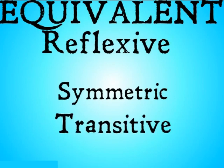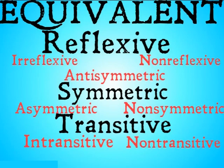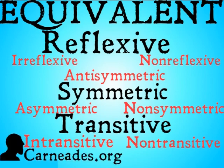So that covers equivalent, reflexive, symmetric, transitive, irreflexive, non-reflexive, anti-symmetric, asymmetric, non-symmetric, intransitive, and non-transitive — a bunch of properties of relations. There are actually more properties depending on how you combine these in interesting ways, and we're going to learn about one of them in our next video on Mariology. Check that out if you want to see how we can apply these properties of relations to a more tangible idea in philosophy. Watch this video and more at Carnades.org, and stay skeptical, everybody.